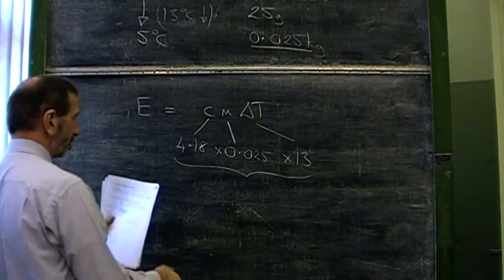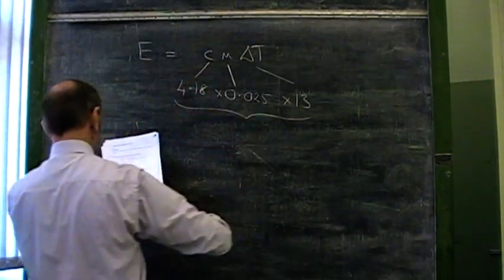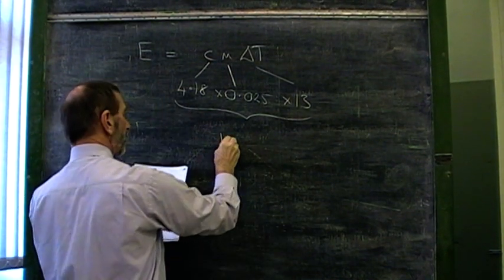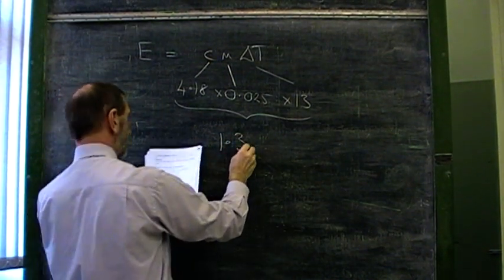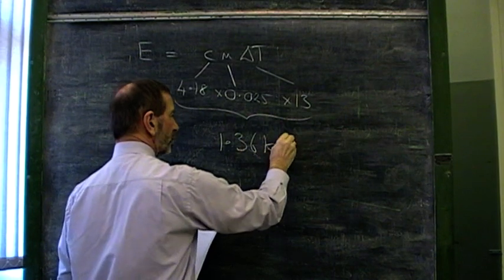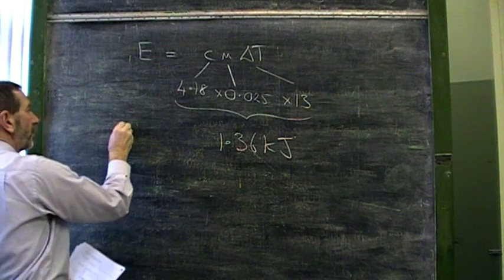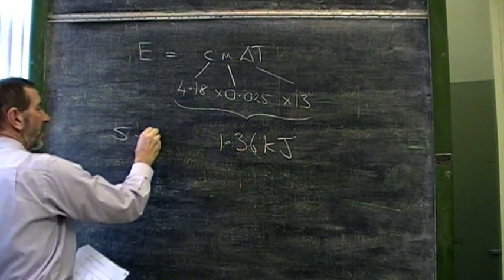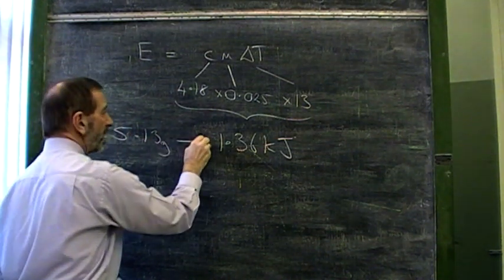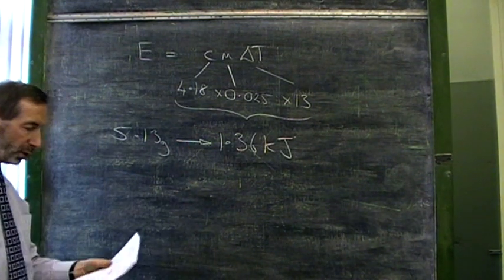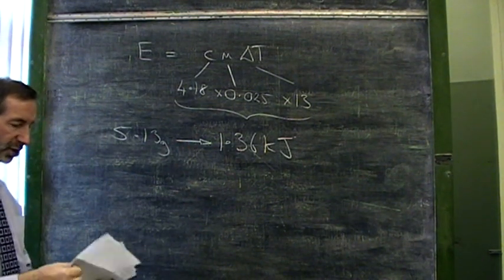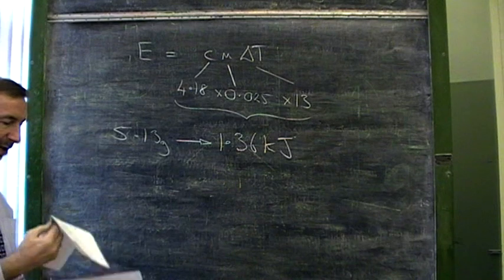Now, it's a very small amount of energy. On a small scale, only 1.36 kilojoules of energy is involved. What we're seeing is, when around about 5 grams of this chemical was dissolved, that's the energy change. What we want to know, of course, is what would be the energy change if a mole of material had been used?